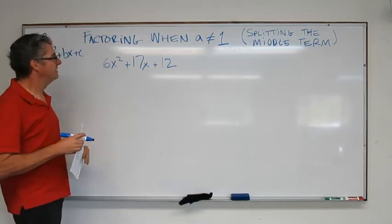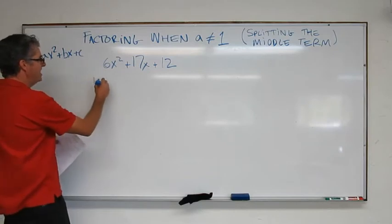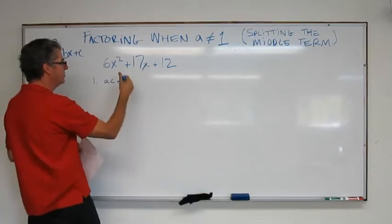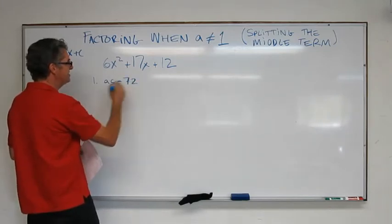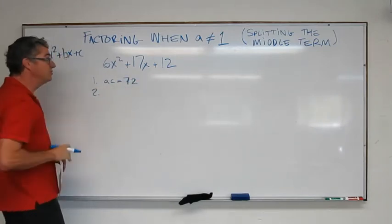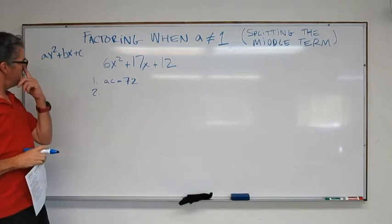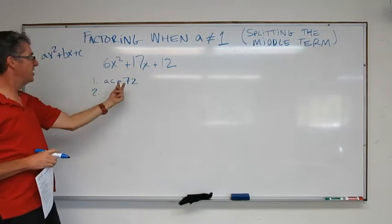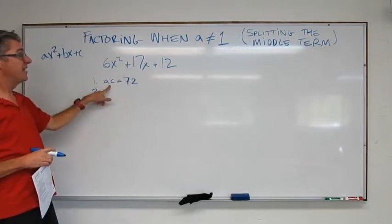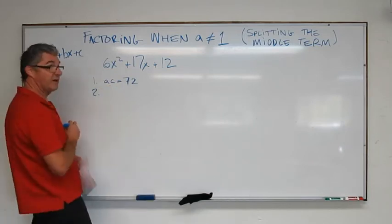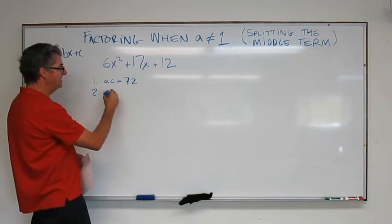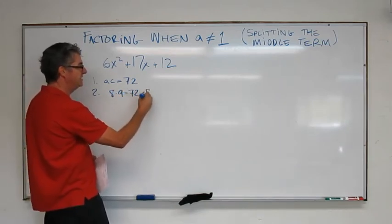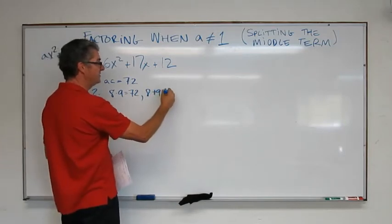Okay, let's see how you did it. So step 1 was AC. Find that. So what is AC? It's 6 times 12. AC is 72. Step 2 is find factors of 72 that add up to 17. In other words, two factors of AC that add up to B. Okay, so let's try that. 8 times 9 equals 72, and 8 plus 9 equals 17.